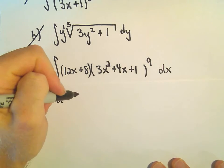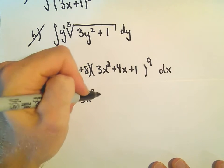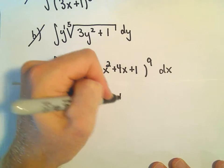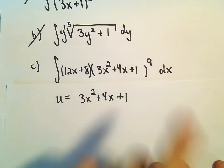I'm going to pick u to be the 3x squared plus 4x plus 1, so the stuff that's being raised to the power.